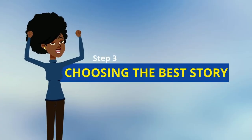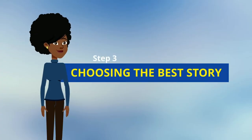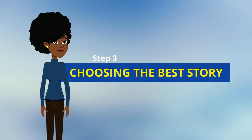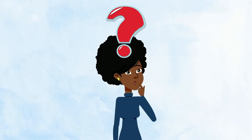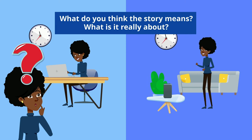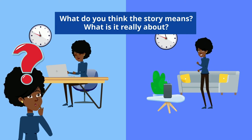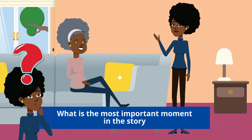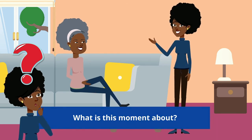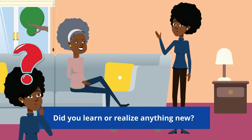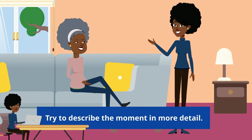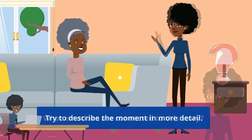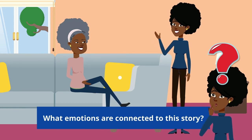Step 3: choosing the best story. Now you have two or three possible stories. To see which one you are going to use, answer these questions: What do you think the story means? What is it really about? What is the most important moment in the story? What is this moment about? Did you learn or realize anything new? Try to describe the moment in more detail. What emotions are connected to this story?